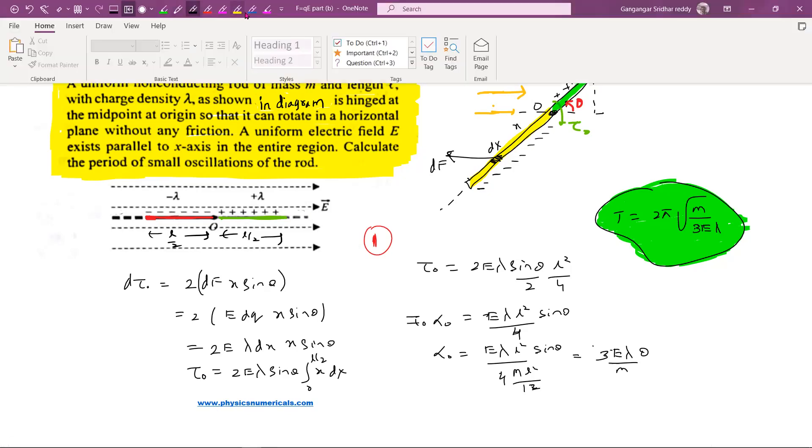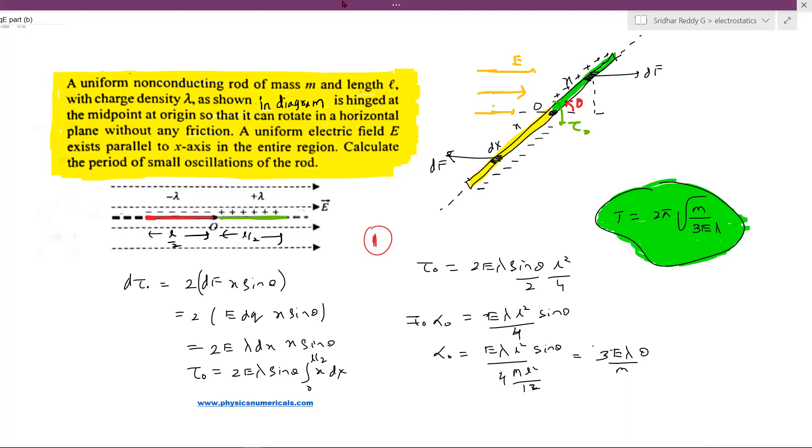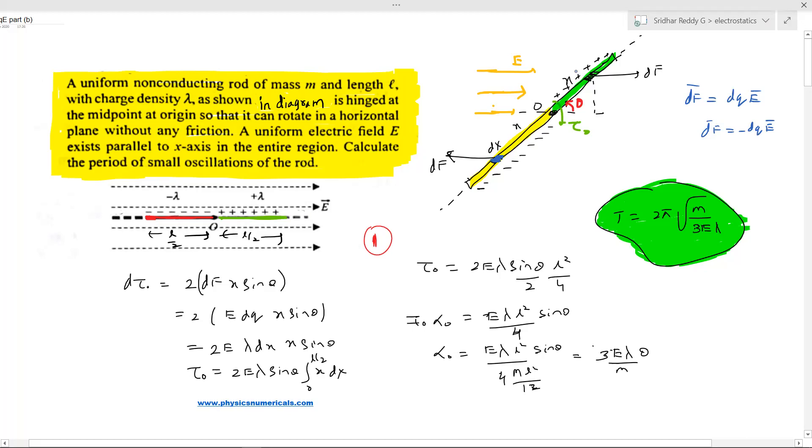Let me give a better description. I assume a small element. The force on that element will be towards the right because it's positively charged. A positively charged element experiences force in the direction of the electric field. What about the negative charge? The force will be opposite to the electric field. That's what you can see here - on the negative charge element, the force is towards the left.